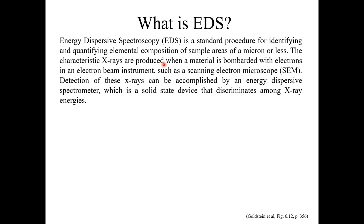Characteristic X-rays are produced in this technique when a material is bombarded with electrons in an electron beam instrument, such as a scanning electron microscope or EMPA. This technique is mostly utilized for quantifying and identifying the elemental composition of a sample.